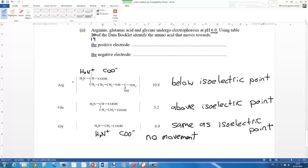If we do the same thing for arginine, because the pH 6 is below the isoelectric point, what's going to happen is a hydrogen is going to join onto this part here leaving arginine with an overall positive charge.